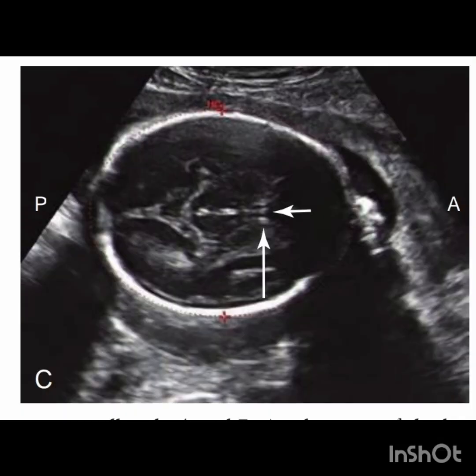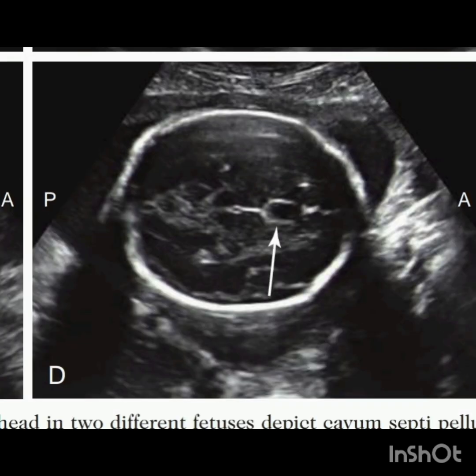In this image we have a structure that resembles the cavum septum pellucidum — it is the column of the fornix. As you can see there is a linear echo indicated by the short arrow. The axial image of the fetal head after slight adjustment of the scan plane demonstrates the cavum septum pellucidum and the absence of the central linear echo.